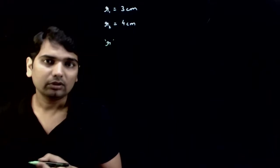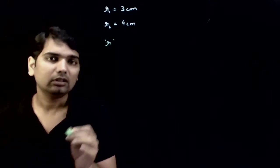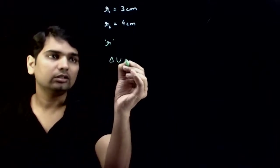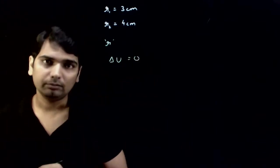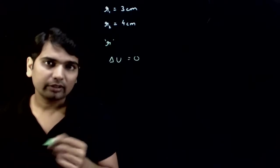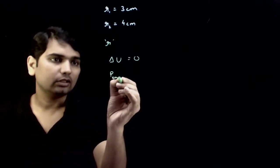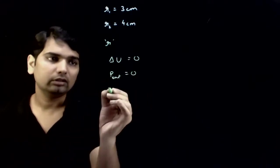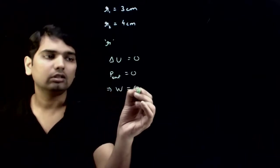Our process is isothermal, that means delta U, internal energy change, is zero. Vacuum is present and external pressure is zero. This implies work done is zero.